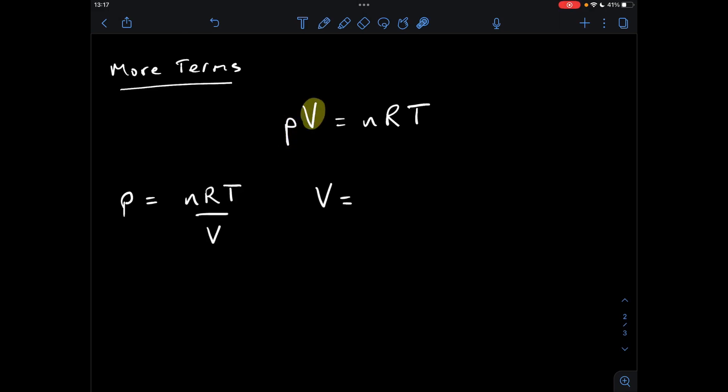Moving on to V, virtually the same logic as before, so we need to get rid of P, so they're multiplying each other on this side, so we take it over to the other side, and it goes on the bottom, so it ends up dividing.